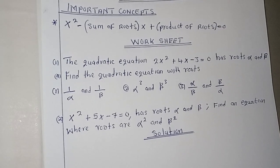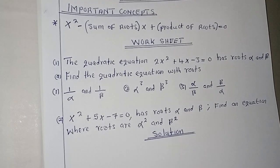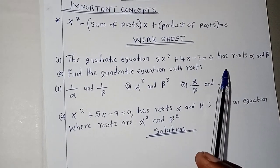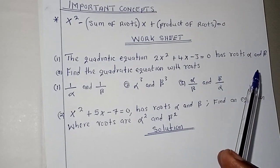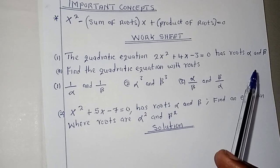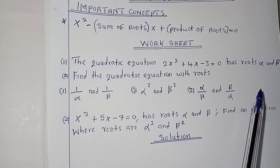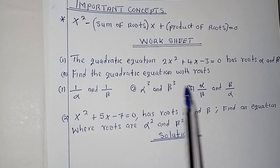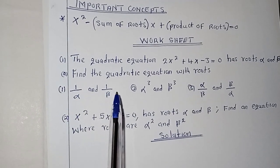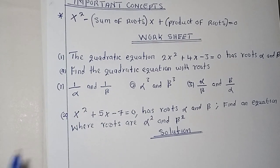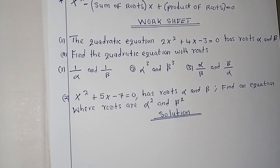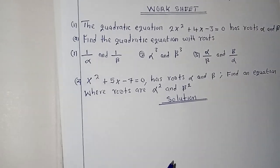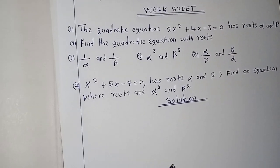The quadratic equation 2x squared plus 4x minus 3 equals zero has roots alpha and beta. We are asked to find the quadratic equation with roots 1 over alpha and 1 over beta.